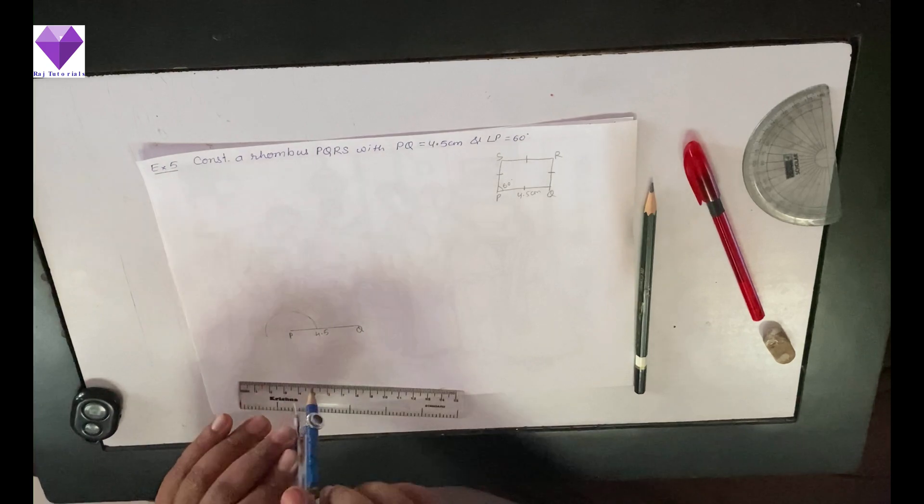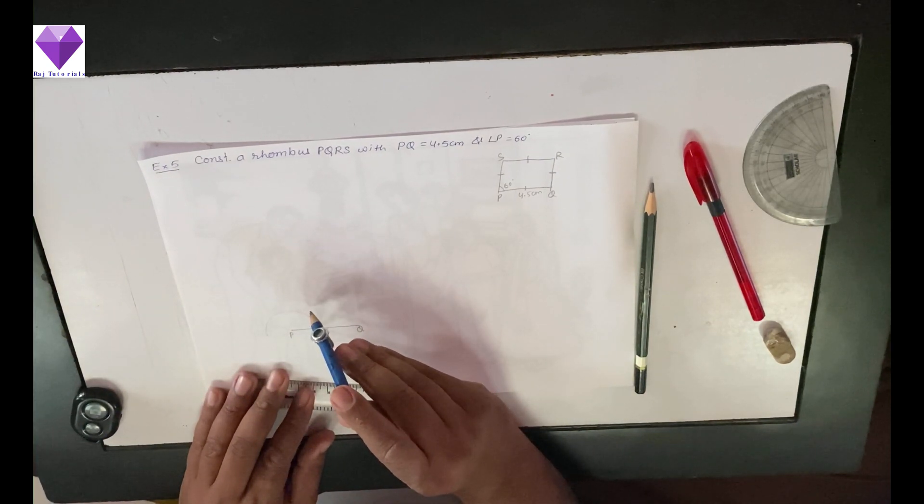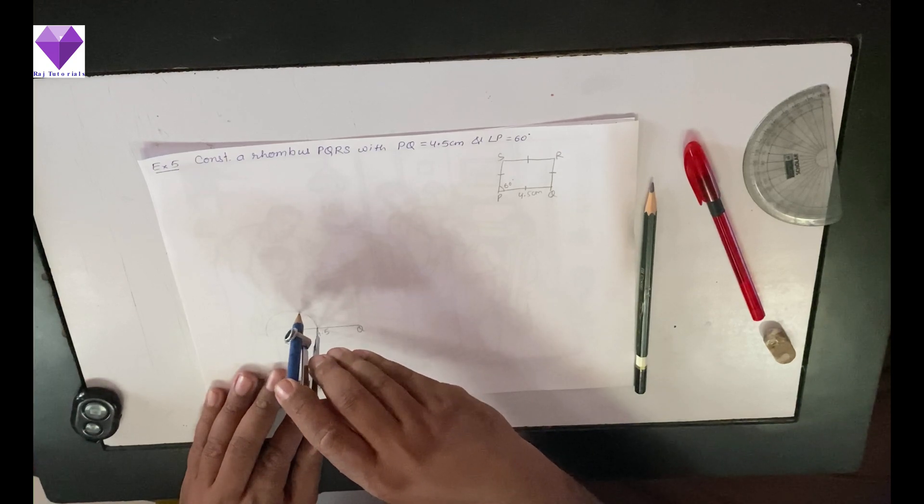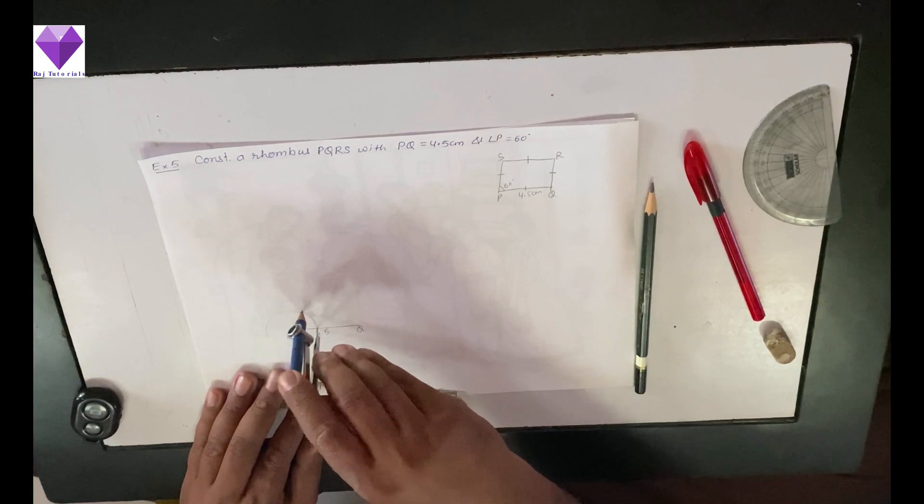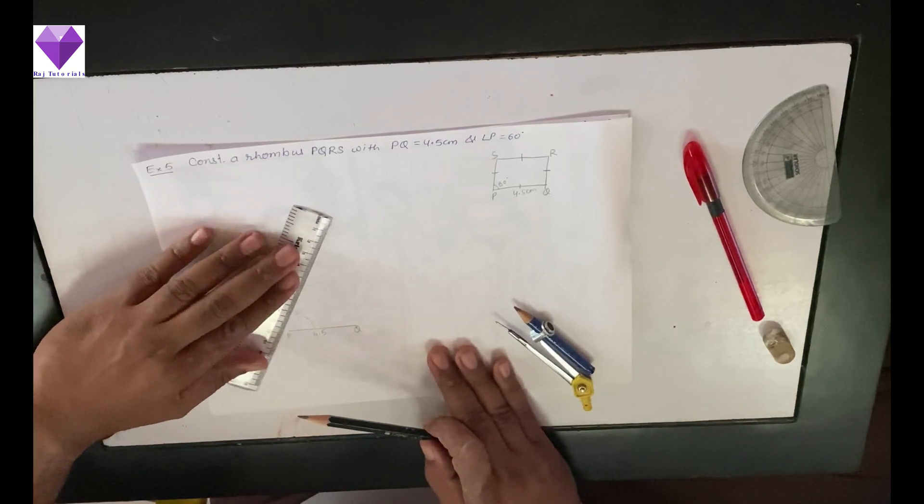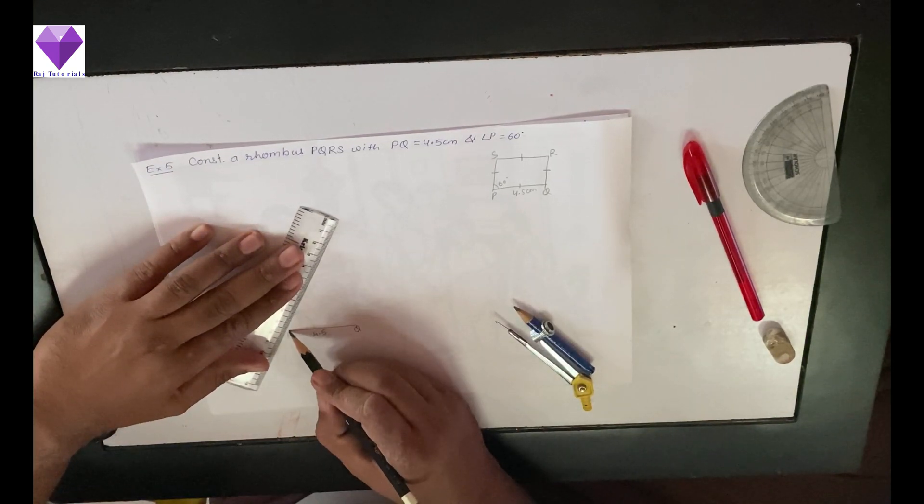And with the same radius, with this point as center, I will mark one arc to get 60 degrees. Now with this point, I will join P and extend.